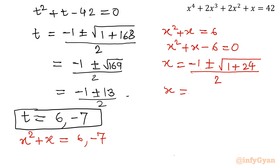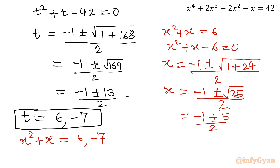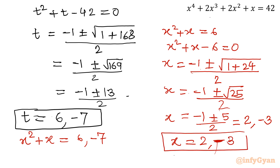I will write x = minus 1 plus or minus square root of 25, over 2, which is minus 1 plus or minus 5, over 2. Considering the plus sign: 4 over 2 = 2. Considering the minus sign: minus 6 over 2 = minus 3. So the two real solutions are x = 2 and x = −3.